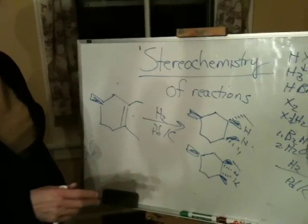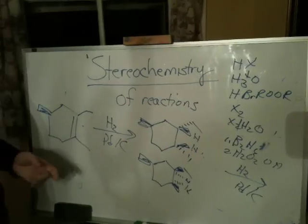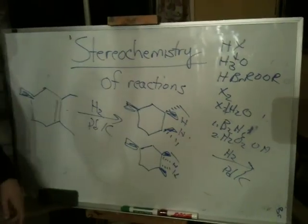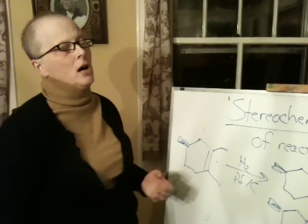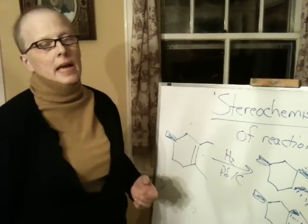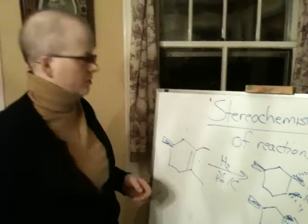And that's kind of it in a nutshell. So cations and radicals, you get everything. Also, oxymercuration, you get everything. These two anti-additions, these are syn additions. Syn additions are limited in what you get. The next video is going to be on solvents in SN2 reactions, et cetera, all those reactions.